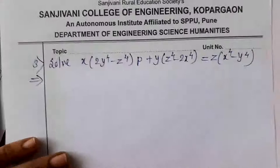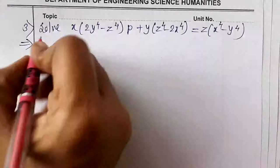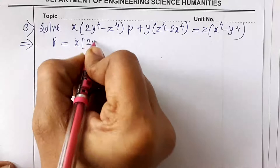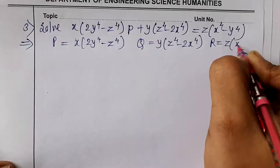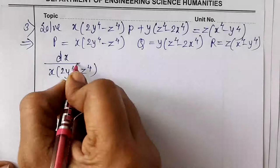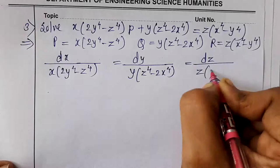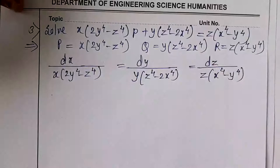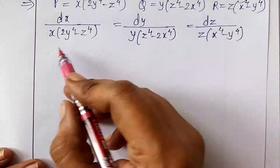The third example: solve x(2y⁴ − z⁴)p + y(z⁴ − 2x⁴)q = z(x⁴ − y⁴). Here P = x(2y⁴ − z⁴), Q = y(z⁴ − 2x⁴), and R = z(x⁴ − y⁴). Again, the terms involve addition and subtraction, so we must choose multipliers.